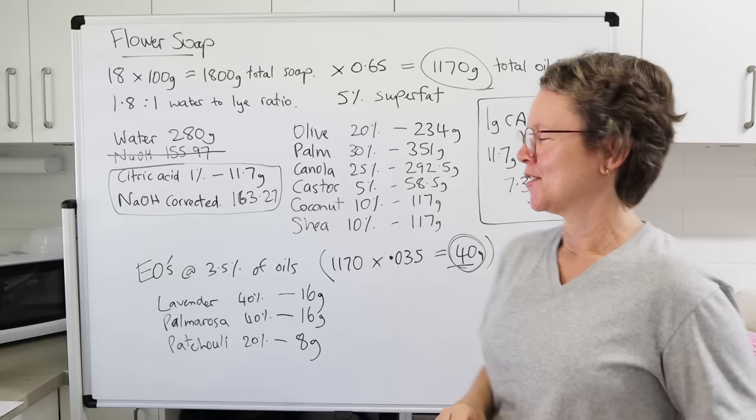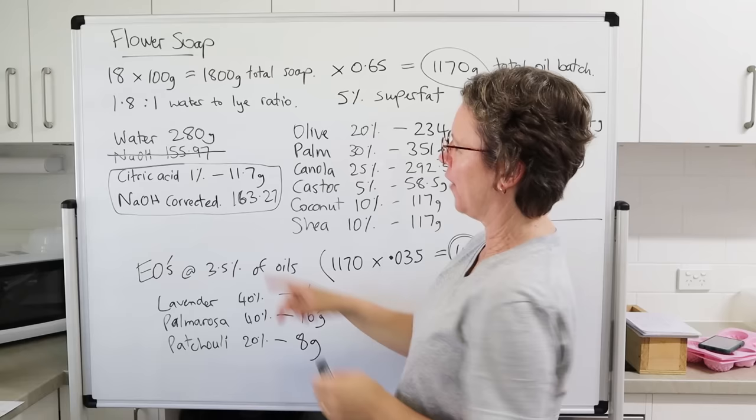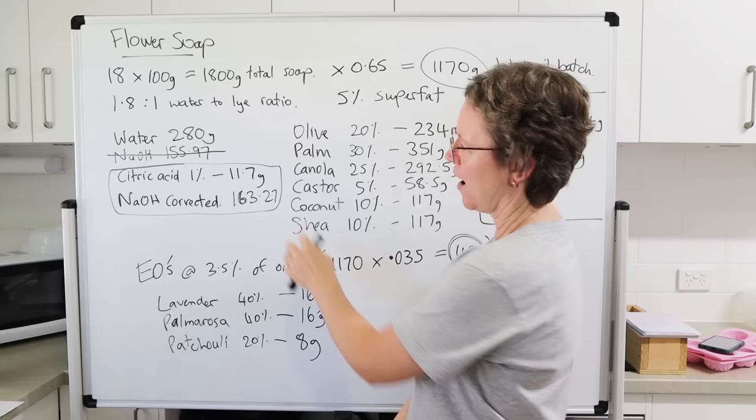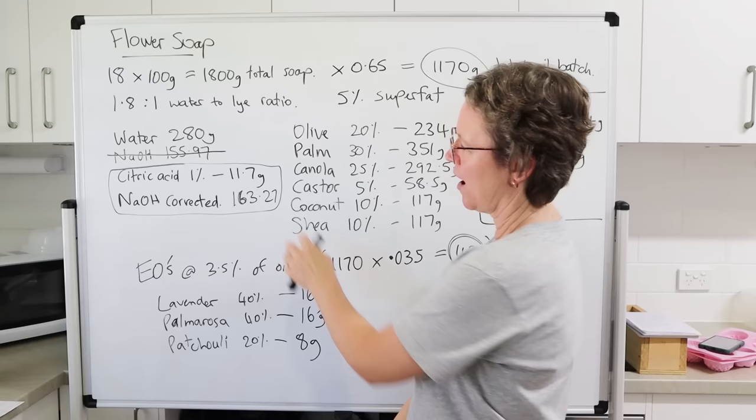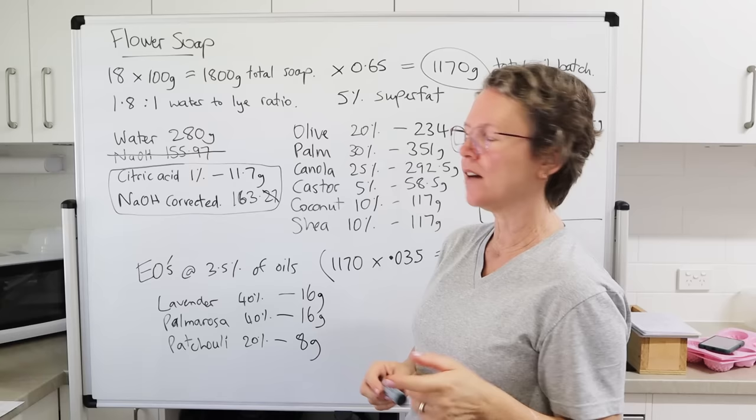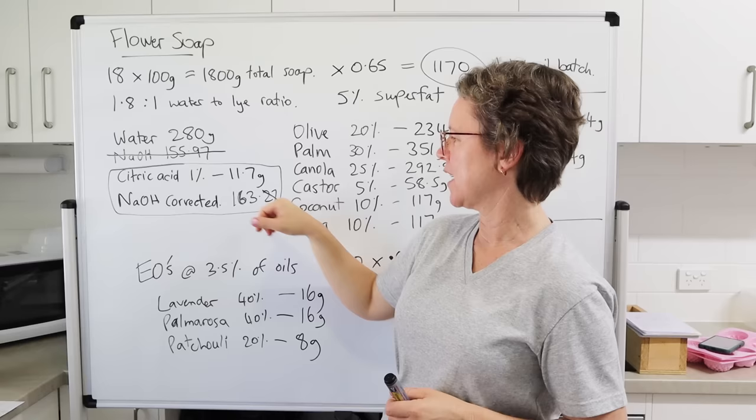Now that I've got my final corrected sodium hydroxide amount of 163.27 grams, I'll just not worry about the 0.27. The scale I use for my soap recipes is just a regular kitchen digital scale, and it doesn't weigh tenths of a gram. So I'm just going to round that down to 163 grams, and that'll be fine.